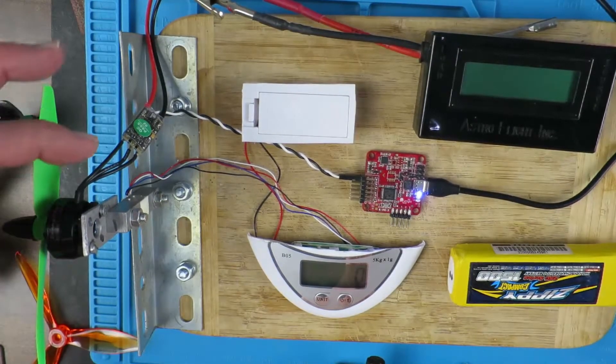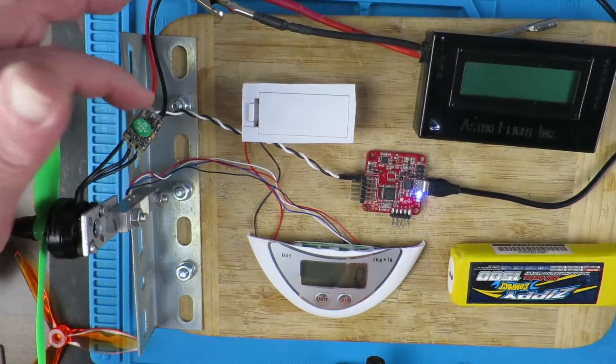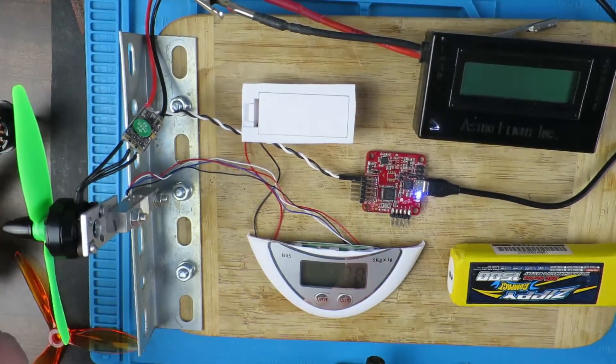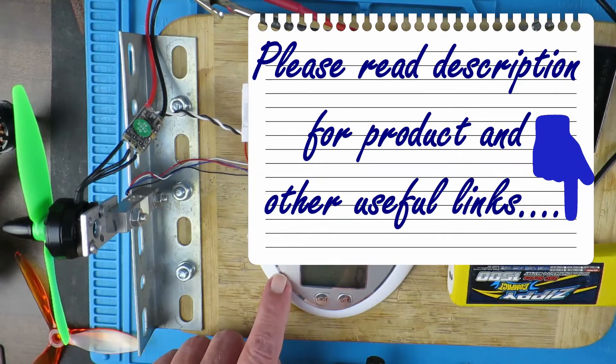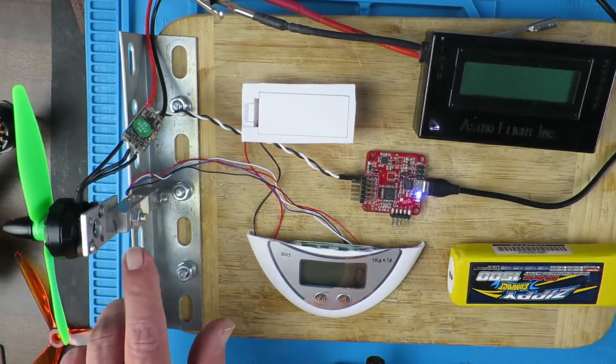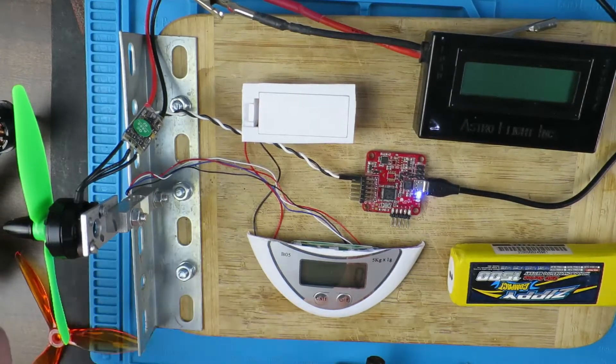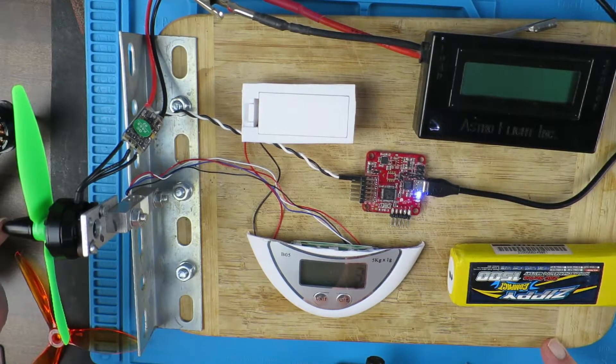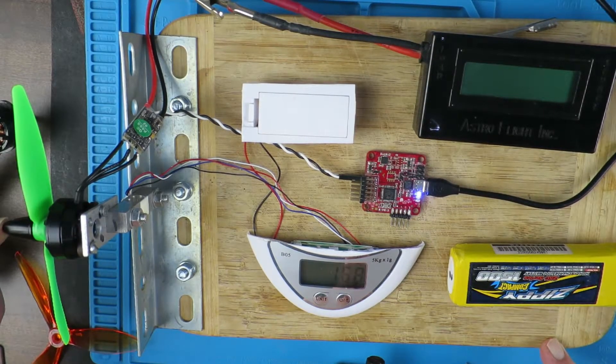It's just to be able to compare different speed controllers, motors, and propeller combinations. As you can see, I have the internals of an inexpensive set of scales and I've taken out the load cell. Simply setting up the propeller in the correct direction will push on the motor and we'll get an indication of the thrust on our scales there.